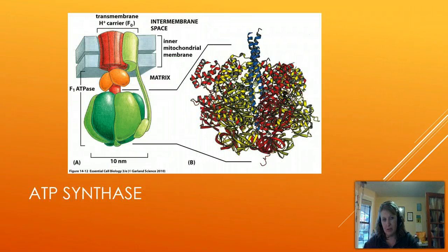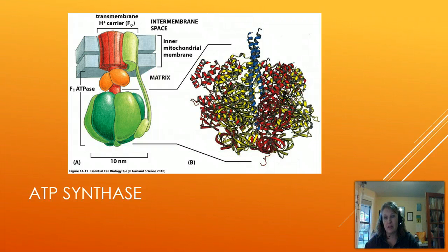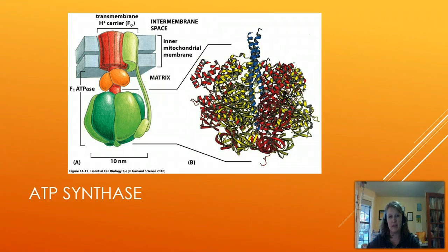Now let's talk about ATP synthase. ATP synthase is a very large molecule that looks like an upside-down lollipop. The two main sections are the F0 section, which is the transmembrane section embedded in the membrane like a water wheel, and the F1 section, which is the ATPase section. The protons come through the F0 section and drive conformational changes in the F1. ATP synthase can run in both directions — to create ATP or to create ADP and inorganic phosphate — depending on what the cell needs.